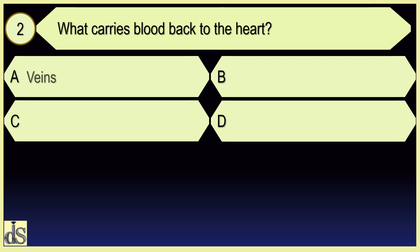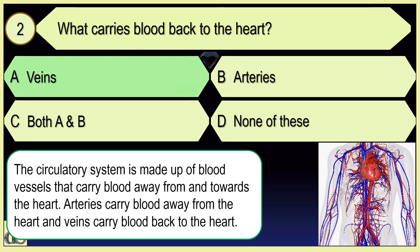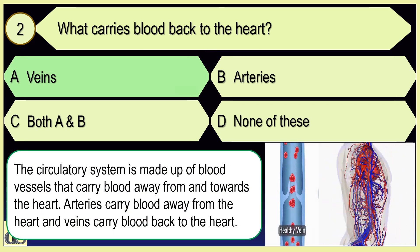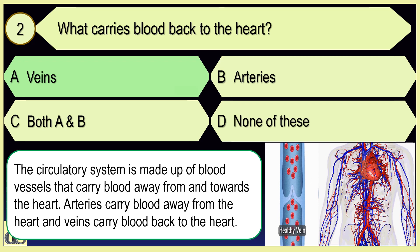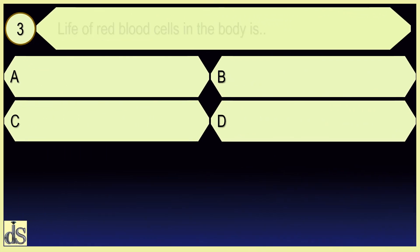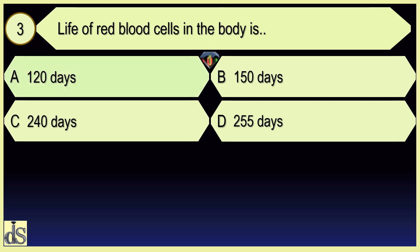What carries blood back to the heart? The life of red blood cells in the body is 120 days.